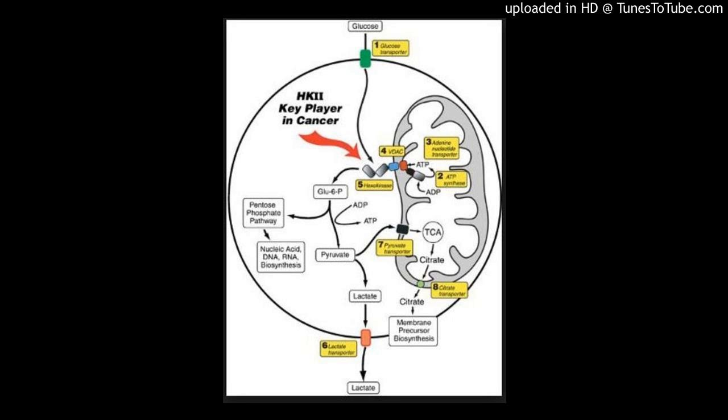HKII knockdown blocked the migratory and invasive capacity of TSCC cells and we specifically determined that the EMT ability decreased. Therefore, our findings revealed that the upregulation of HKII enhanced glycolysis